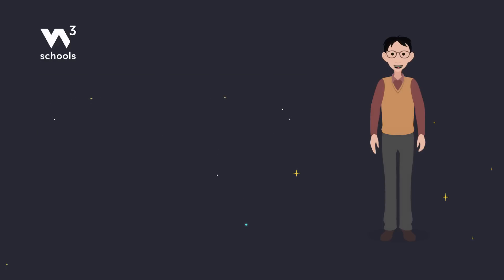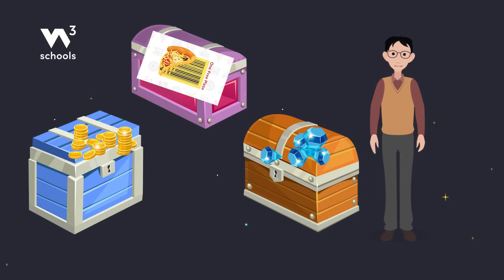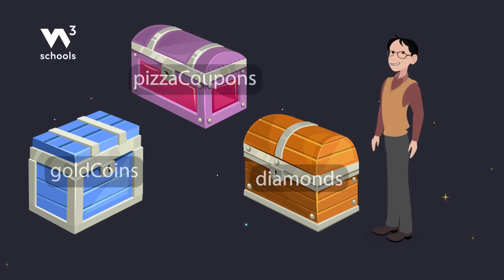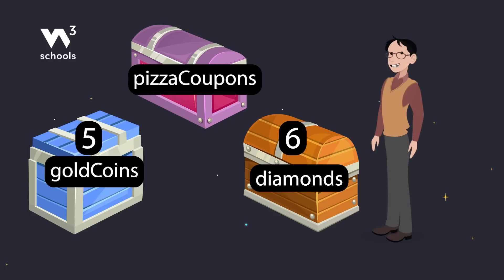So what are variables? Imagine you've got a treasure chest where you can stash gold coins, diamonds, or pizza coupons. Variables are like these chests — you give them names to identify what's inside. Here, gold coins holds five, diamonds holds six, and pizza coupons? Well, sadly, it holds zero.